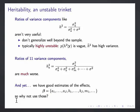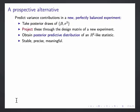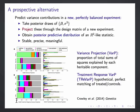The things that are actually well estimated. And so we develop a kind of prospective alternative that is stable and does generalize well. What in fact we do is we take the posterior, we sort of project the posterior through the design matrix of a new, perfectly balanced experiment. And then from those posterior predictions, we get a kind of R squared-like statistic. So this is something that's based on not the variance components, but the effects. And it results in something that's stable, precise, and meaningful.